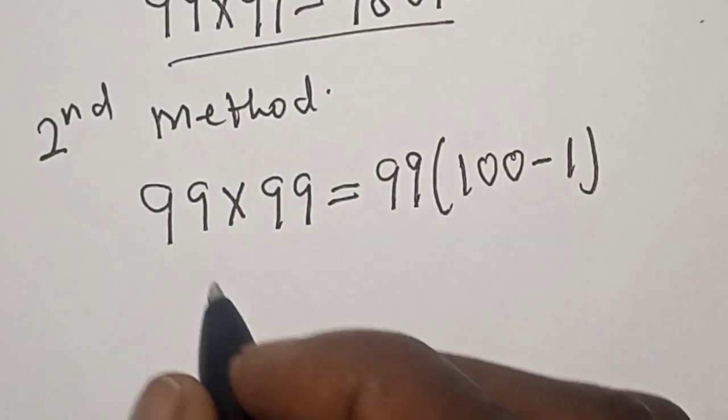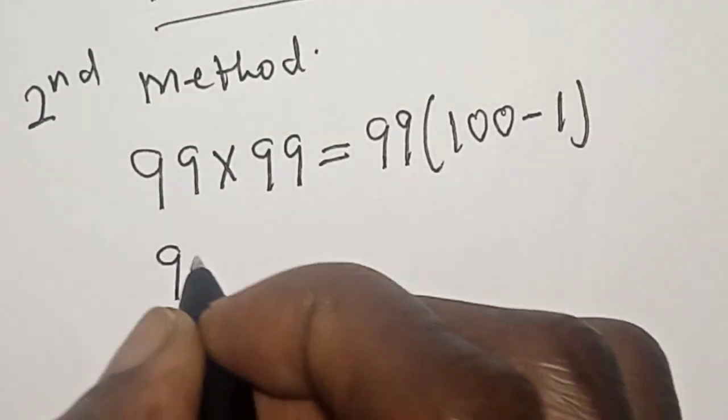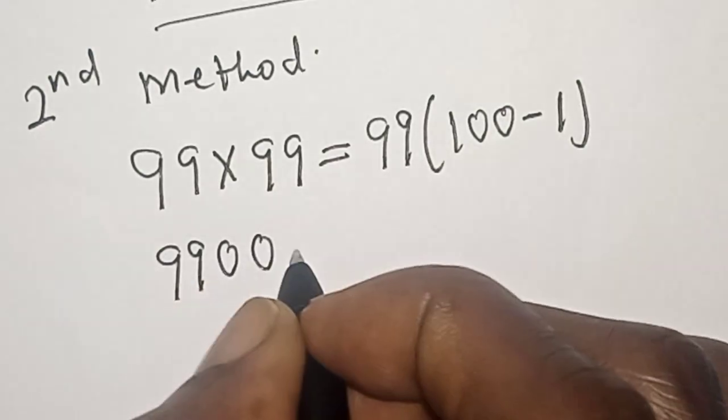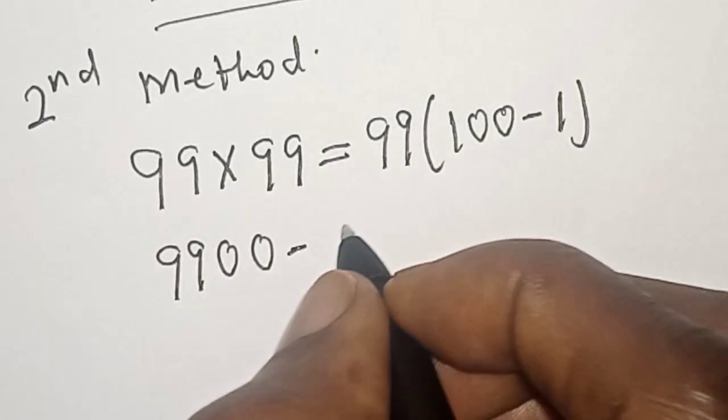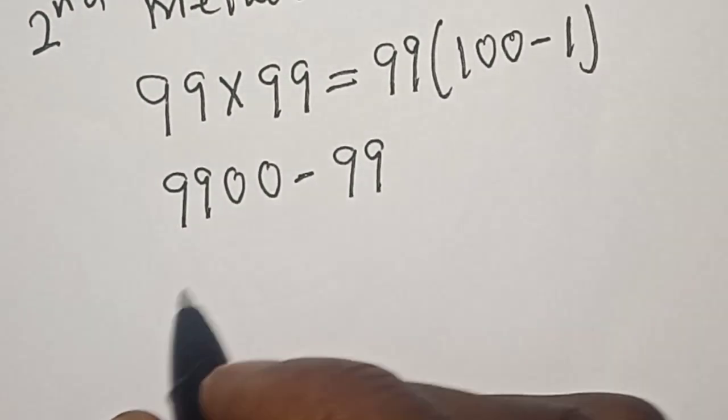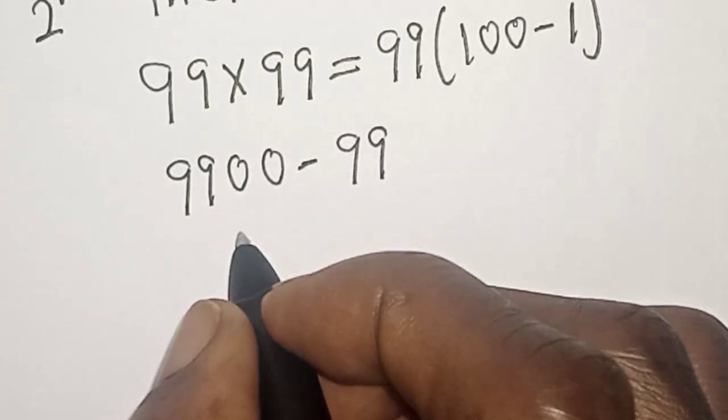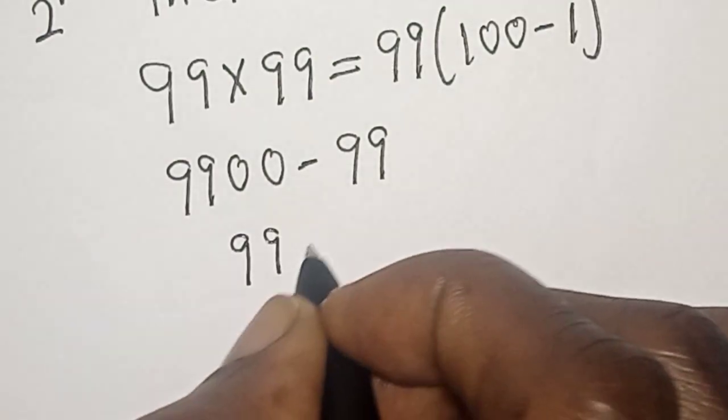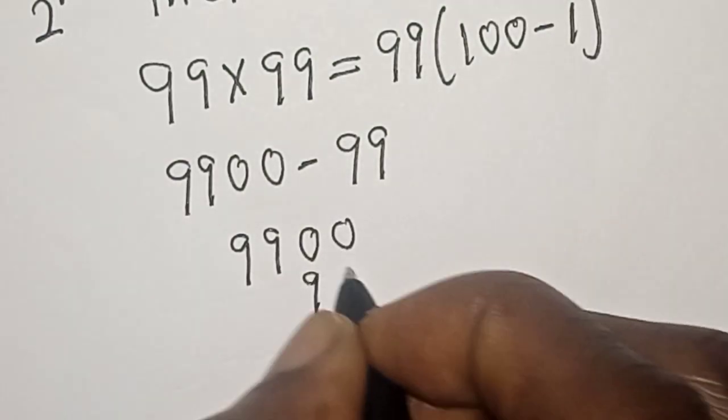Now let's open this bracket. We have 9,900 minus 99. Now let's subtract 9,900 minus 99.